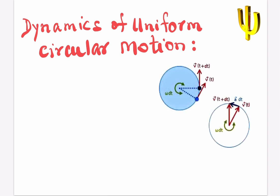Let's start the video on dynamics of uniform circular motion, which is very important. Let us consider a particle that moves with constant speed on a circle. Its velocity at time t is v(t), and at time t + dt it becomes v(t + dt), making an angle theta in time dt. This is called uniform circular motion. In this case, the radial acceleration is not zero; only the tangential acceleration is zero.